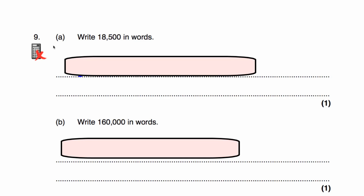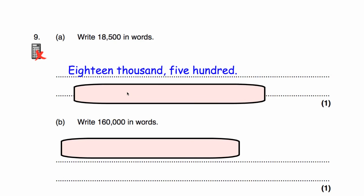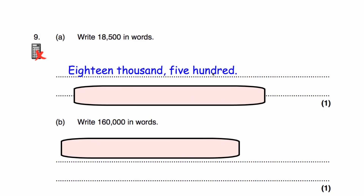Question 9A: we've been asked to write the number 18,500 in words. We've got 500 and we've got 18,000, so our answer is eighteen thousand, five hundred.